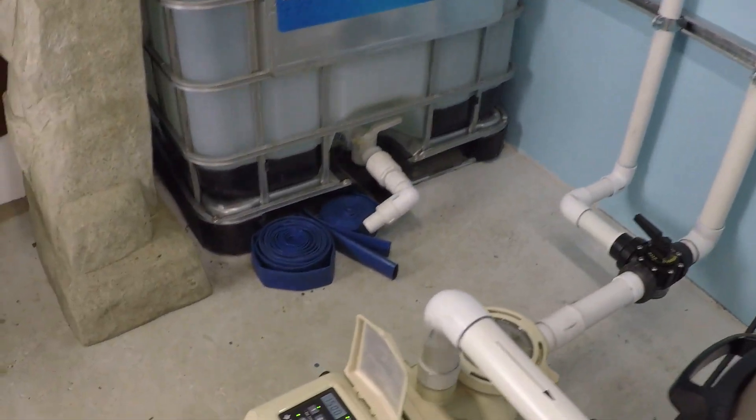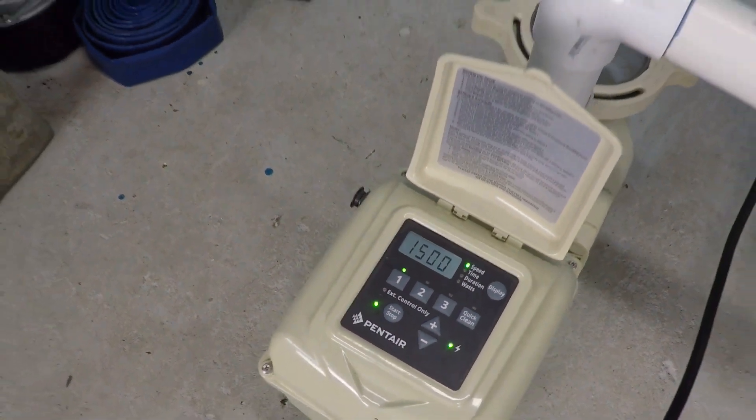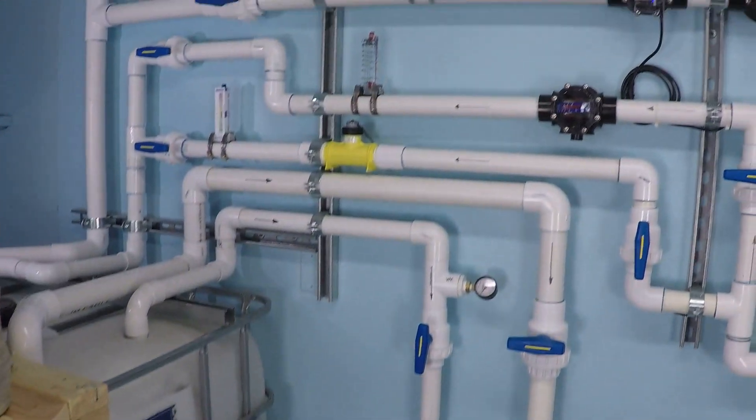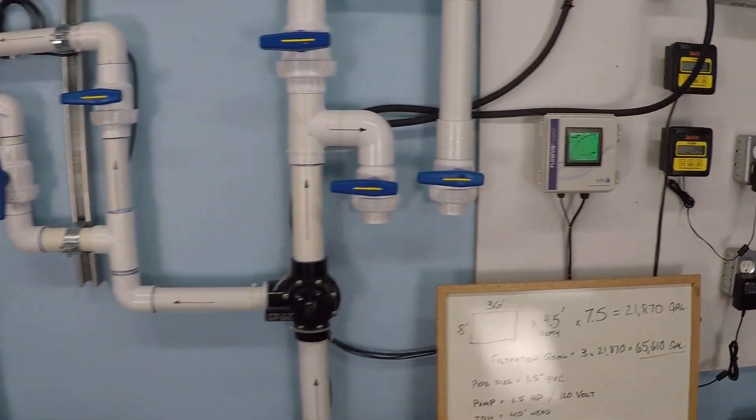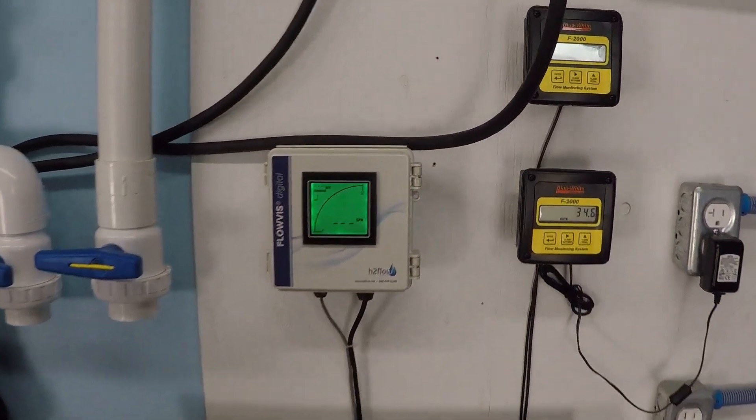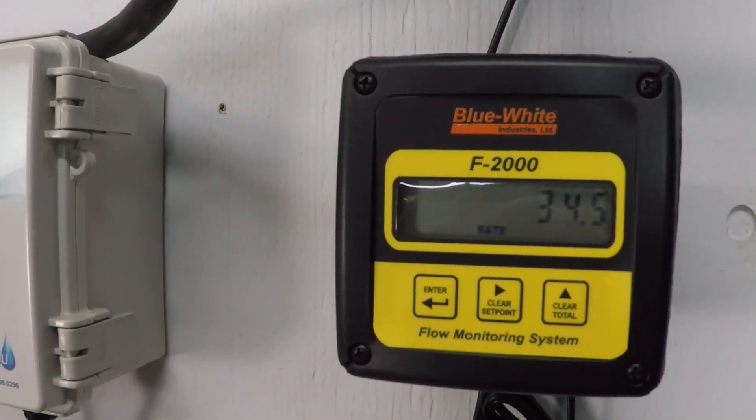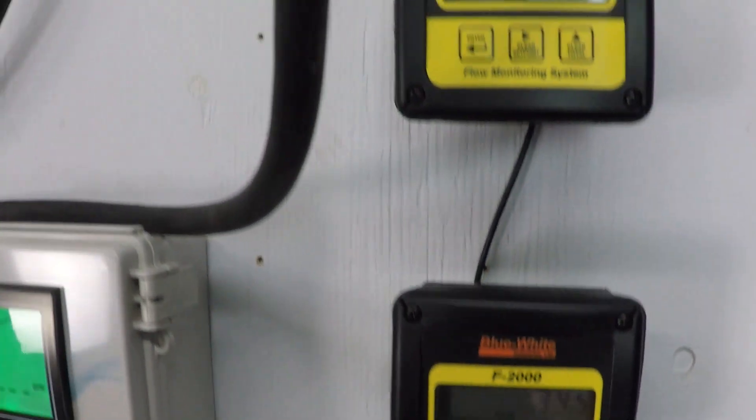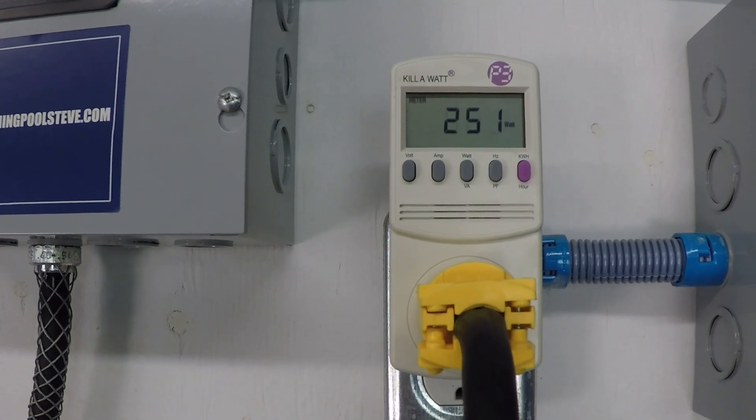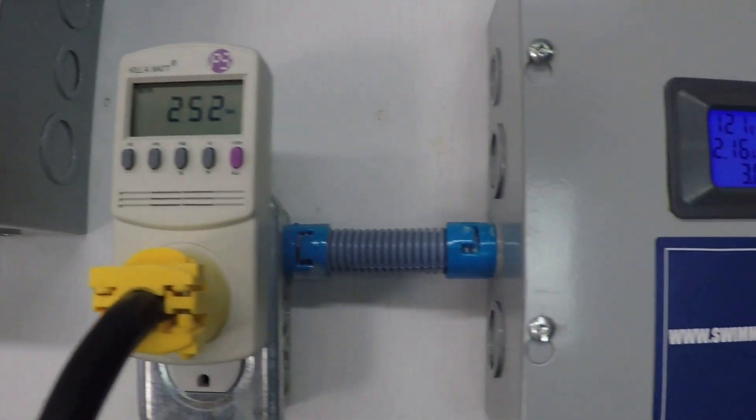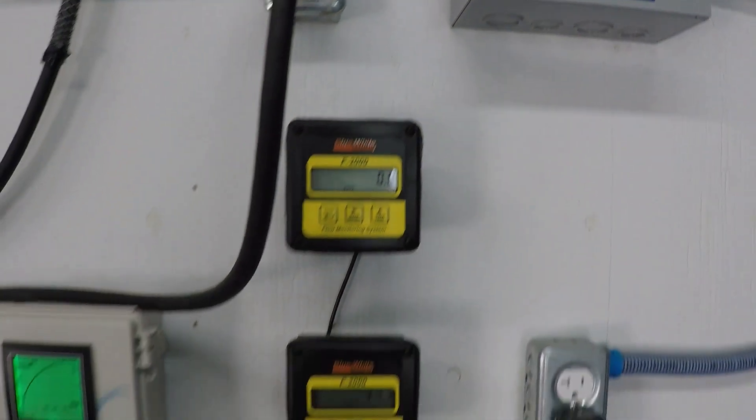So just to show you, running on this system right now we have a 1.5 horsepower variable speed pump running at 1500 RPM on a 1.5 inch system. We're monitoring through suction and return - just under 35 gallons per minute, just over 250 watts, 252 to 253 watts there.